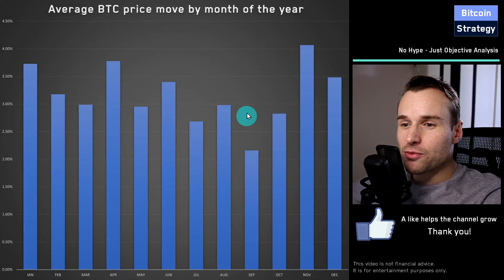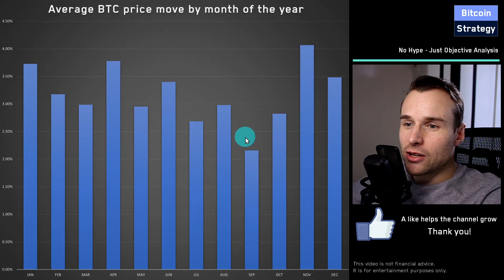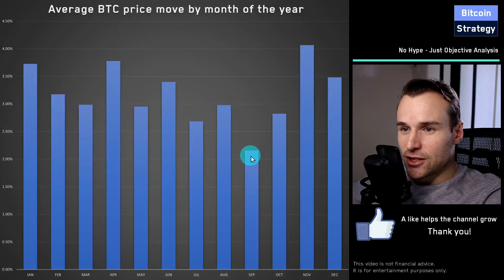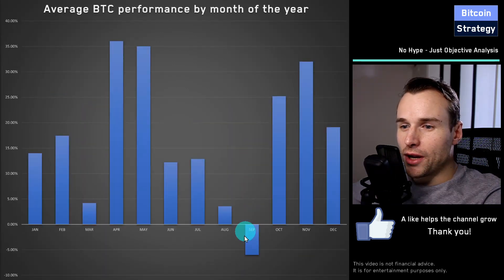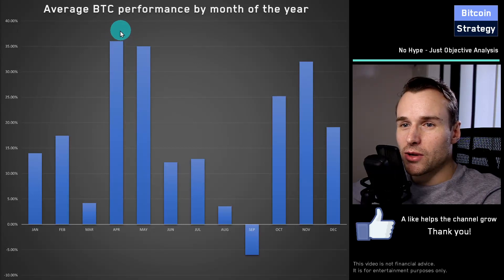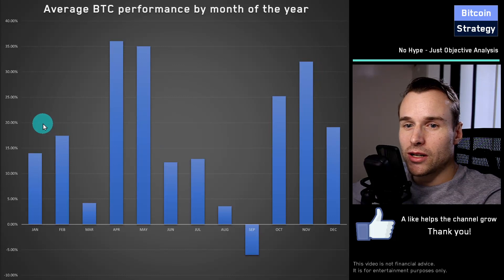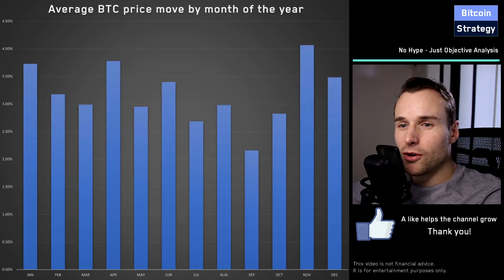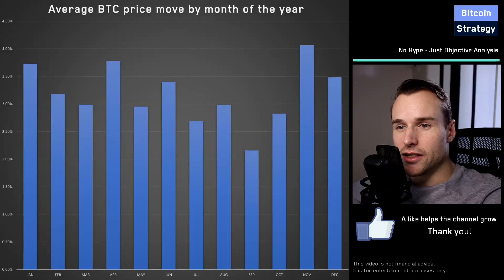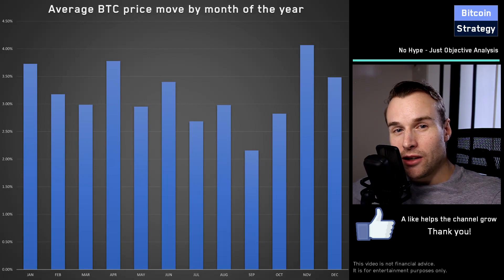Looking at the average price movement, the theory seems to hold true. The lowest price movement in general is in September, which is also where performance is negative — little action, little movement, no money to be made. A lot of price movement happens in April and at the end of the year. January is not too bad either, and that's also where we see a lot of performance. Flipping back and forth between performance and volatility: April does well, end of year does well, January is not too bad.